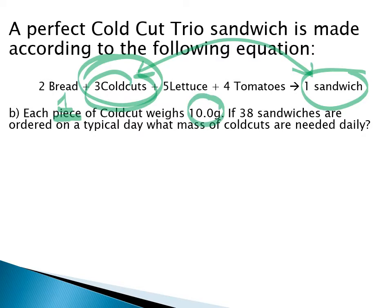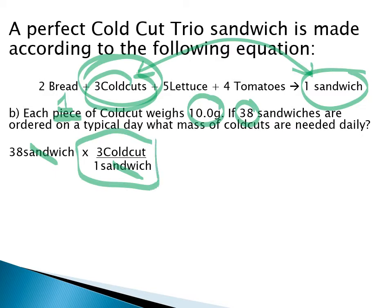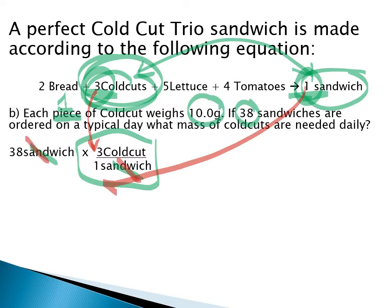If a given day has 38 orders of these sandwiches, how many cold cuts would you have to order from your delivery service? They're going to sell you a certain mass rather than counting them out. We start with 38 sandwiches. Each sandwich uses three cold cuts, so we convert from sandwiches to cold cuts using our 1:3 ratio — three cold cuts per one sandwich; sandwiches cancel out, giving us the number of cold cuts per day.